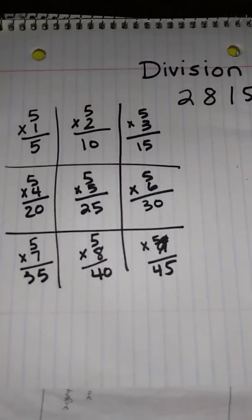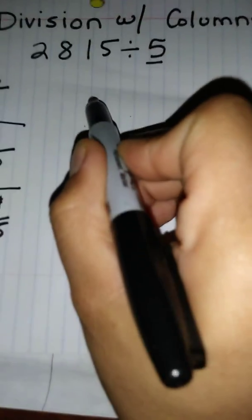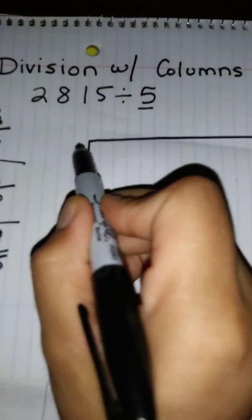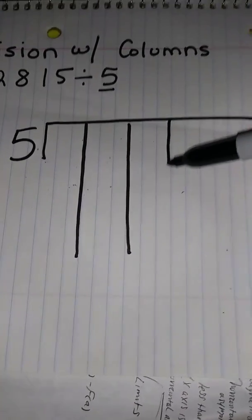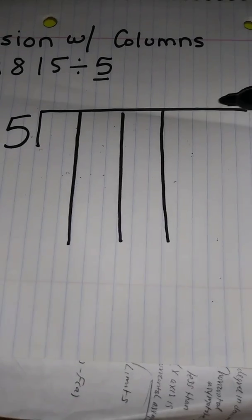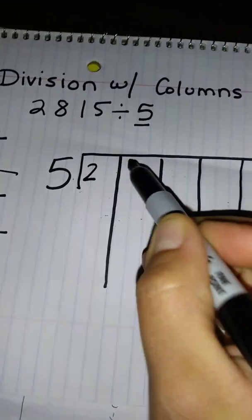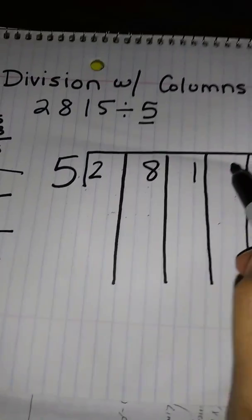Alright, so now this resource here is going to help me solve my problem. Now over to the side I'm going to go ahead and create my long division problem with the columns. So I'm just making some lines for my columns. So I have a 2, 8, 1 and a 5.